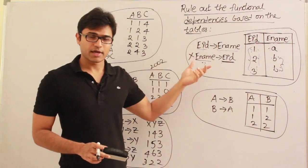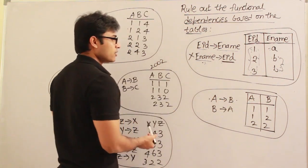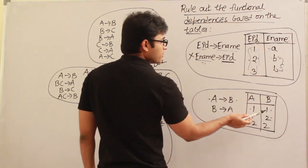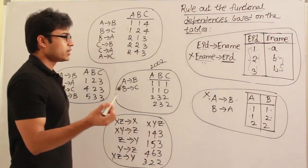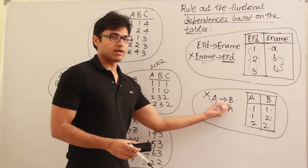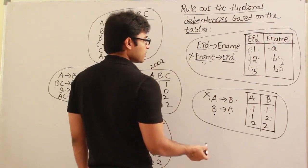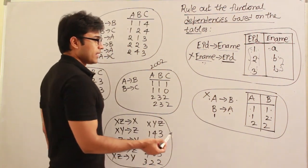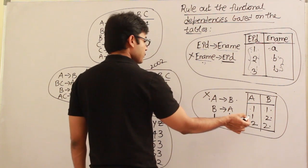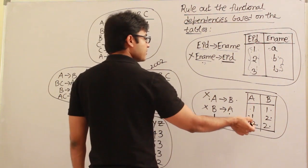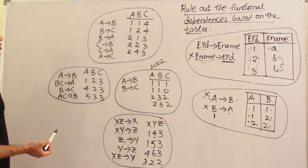What about this table? Given a value of A, will you be able to say a value of B uniquely? Given A=1, I will not be able to say the value of B because B can be 1 or 2 — therefore I can rule out A→B. If this functional dependency had existed and been applied as a constraint, you would never get these values. Now given a value of B, can you get a unique value of A? If B=2, A can be 1 or 2 — therefore B→A is also ruled out.